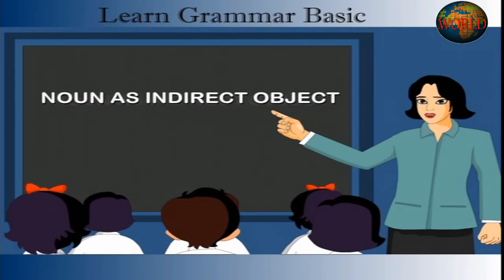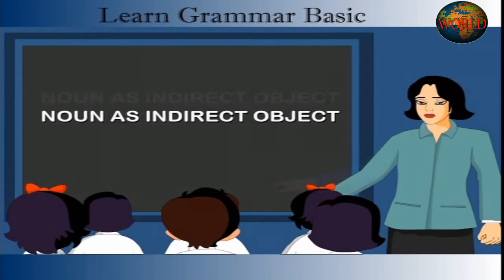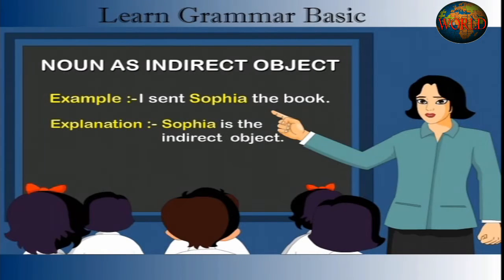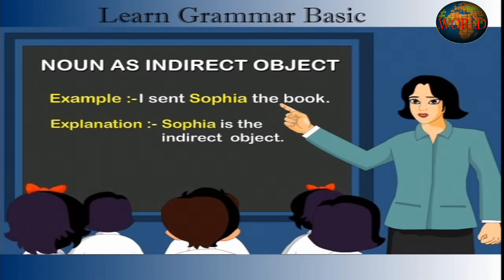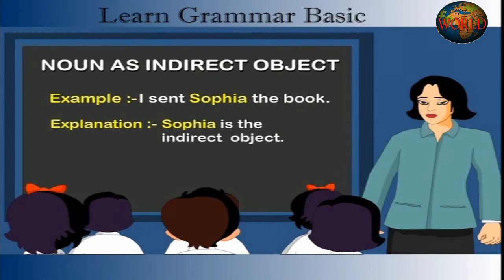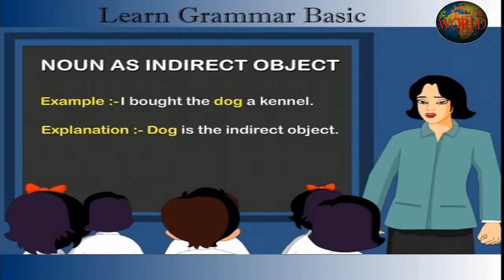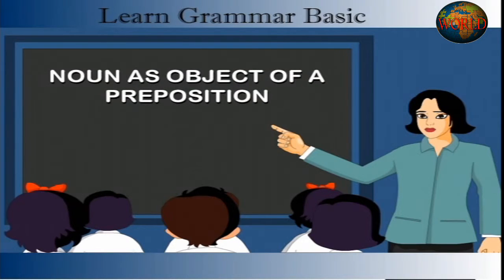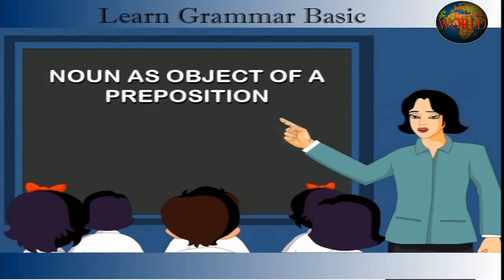Noun as Indirect Object. Example: I sent Sophia the book. Explanation: Sophia is the indirect object. Example: I bought the dog a kennel. Explanation: Dog is the indirect object.